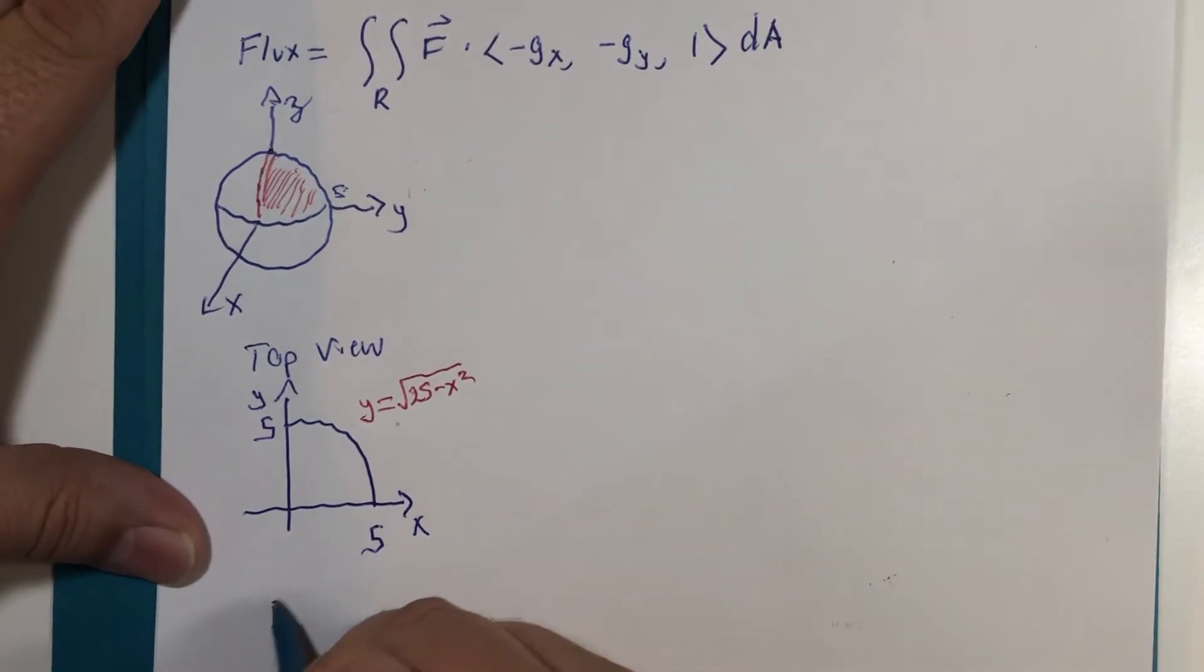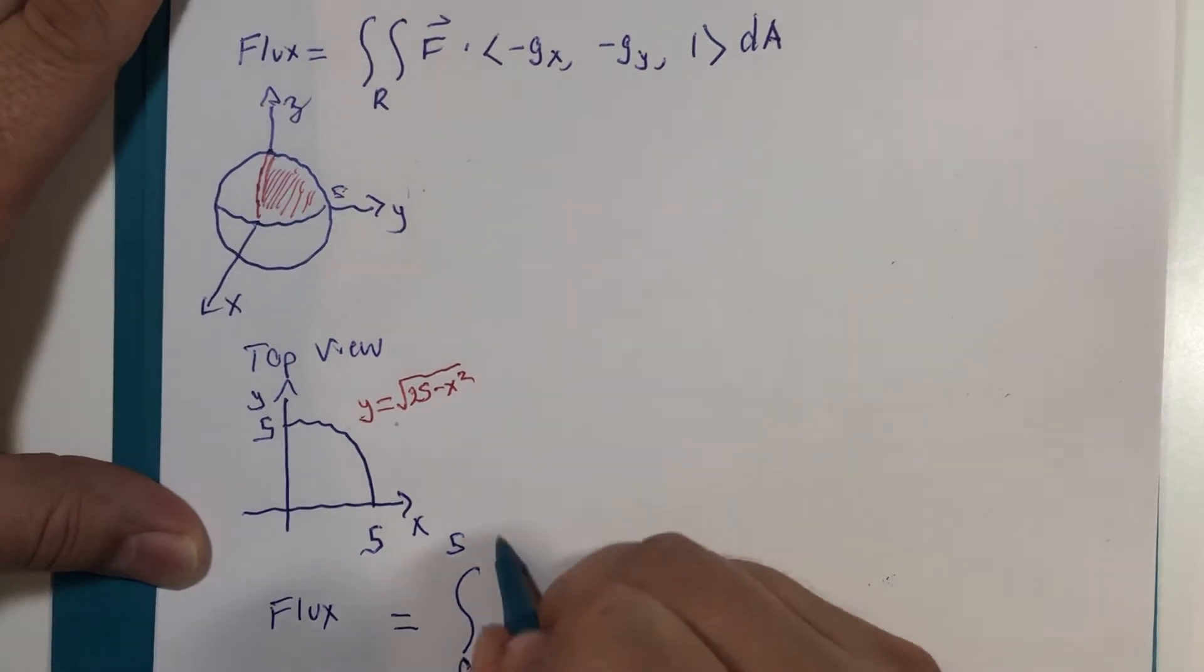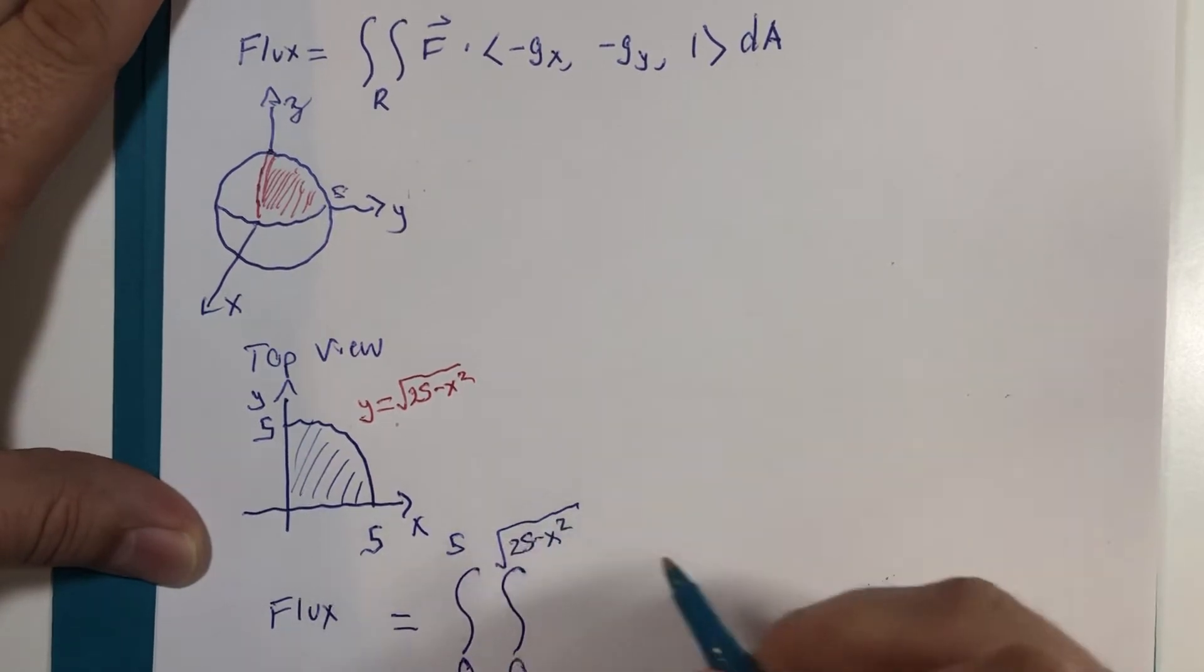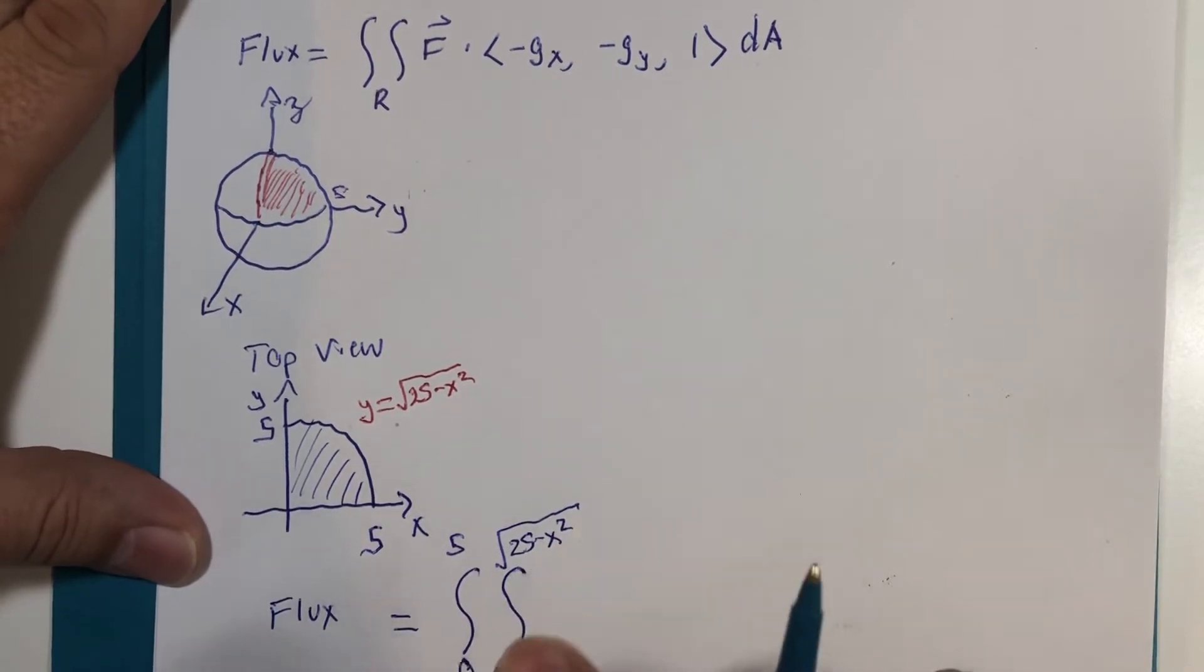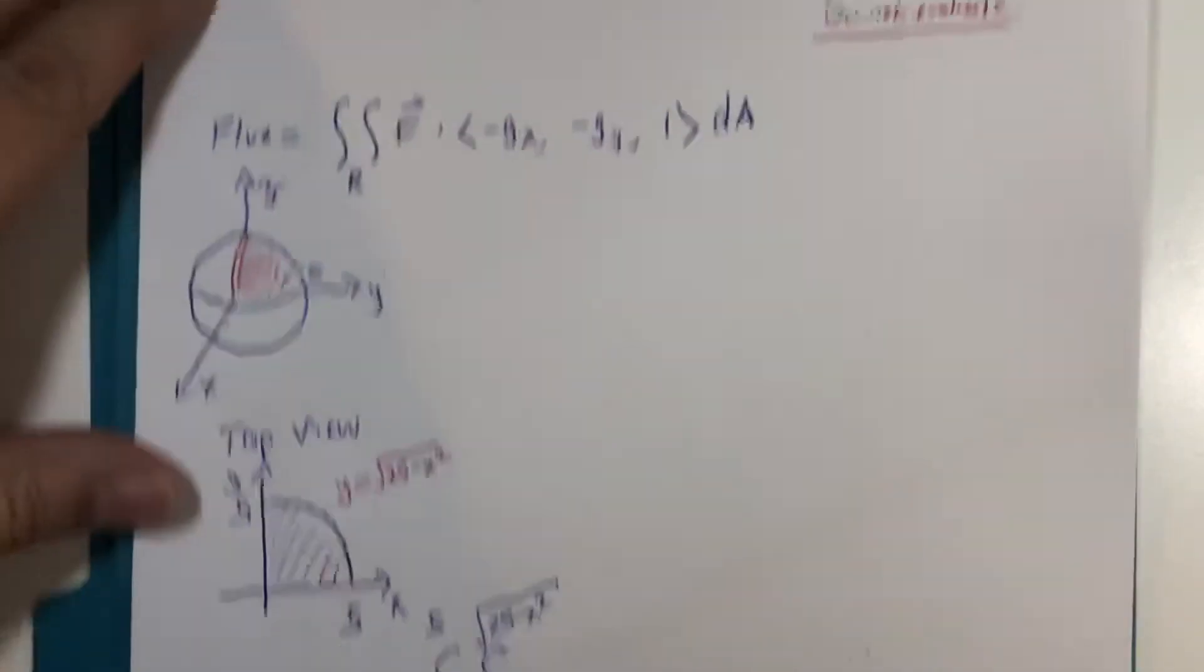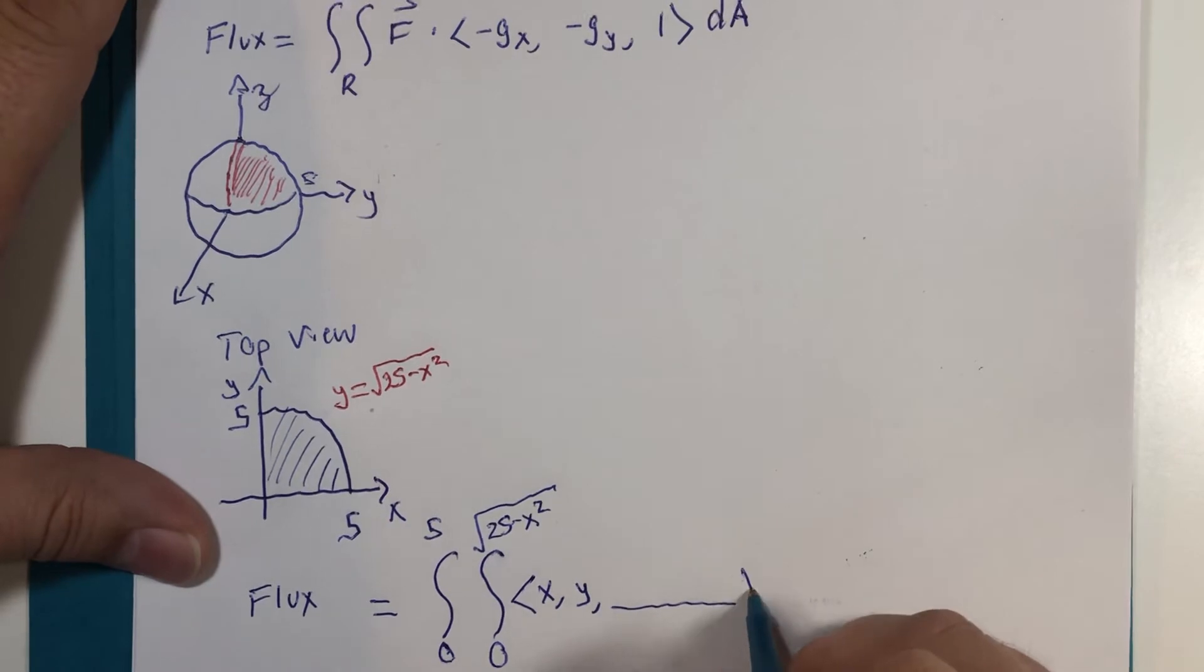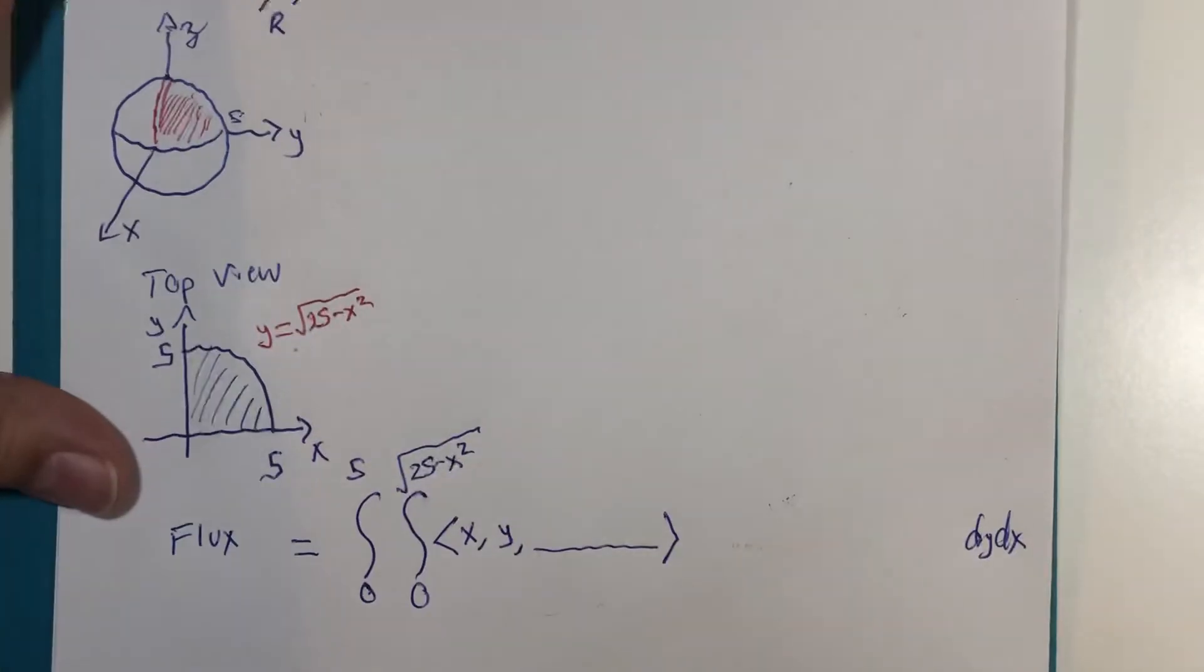When I skip to the punchline for this problem, my flux is going to be a double integral. X goes from 0 to 5, and y goes from 0 to the partial circle here: square root of 25 minus x squared. I would do that more slowly but we should have practiced this a lot by now. I got a vector field x comma y comma z - not z though, you don't get to put z there. This is going to be a dy dx integration when the dust settles. No z's in our dy dx, so I'm going to have to come back and figure out what's going to happen next.